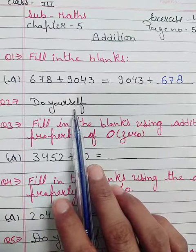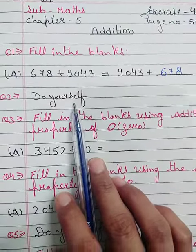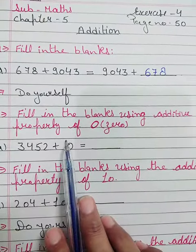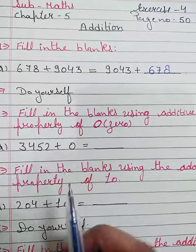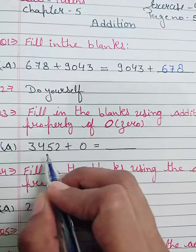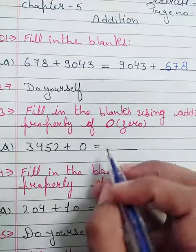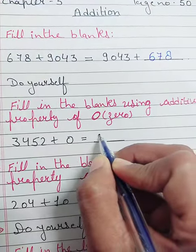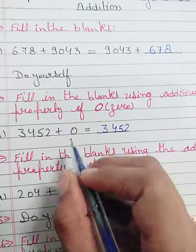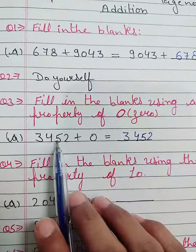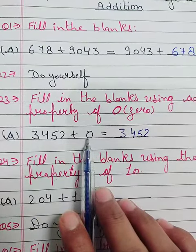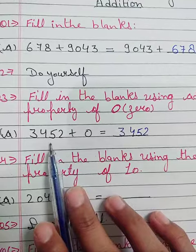Question number 2, same you will do yourself. Now question number 3: fill in the blanks using additive property of zero. Now you will add zero to this number, so here you will write 3452 because the digit will not change whenever you add zero and subtract zero. The digit will be the same.